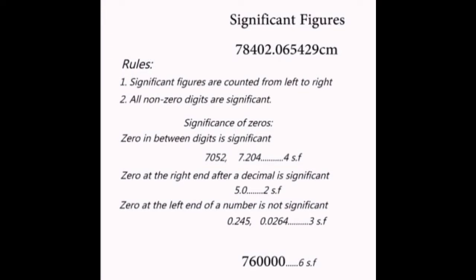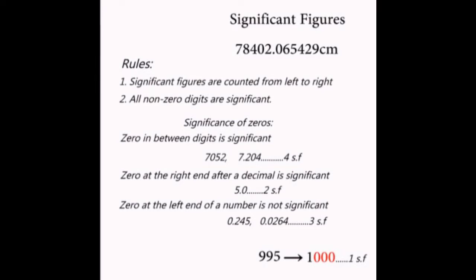On the other hand, the number 995 can be written as 1,000, correct to one significant figure. In this case, only one is significant and the zeros are not, even though they must be written.